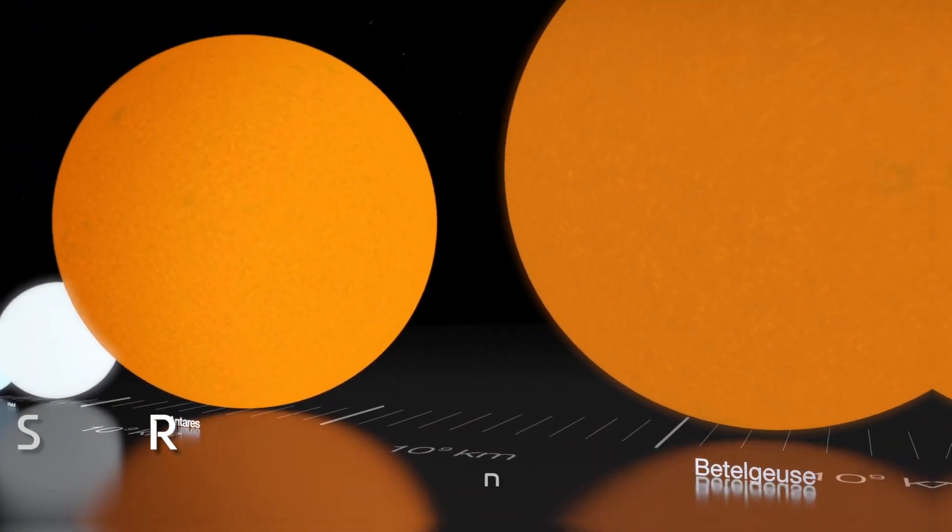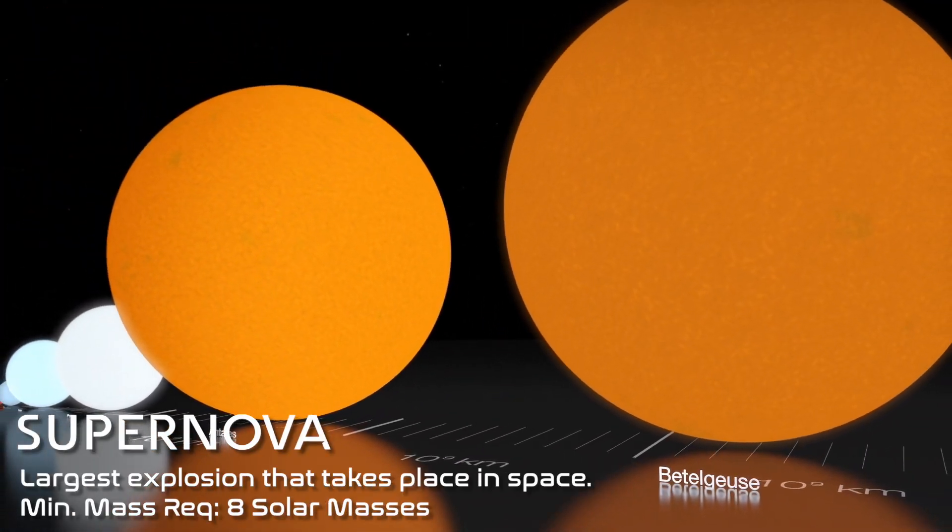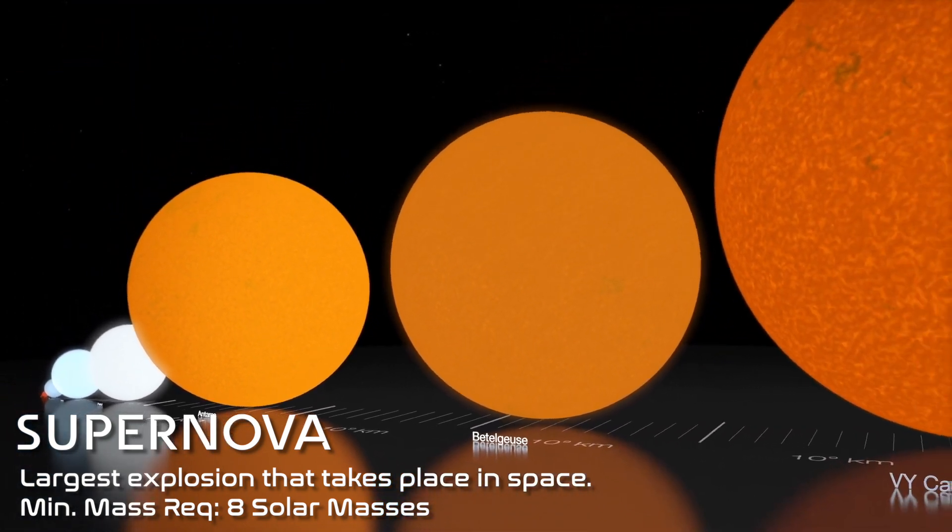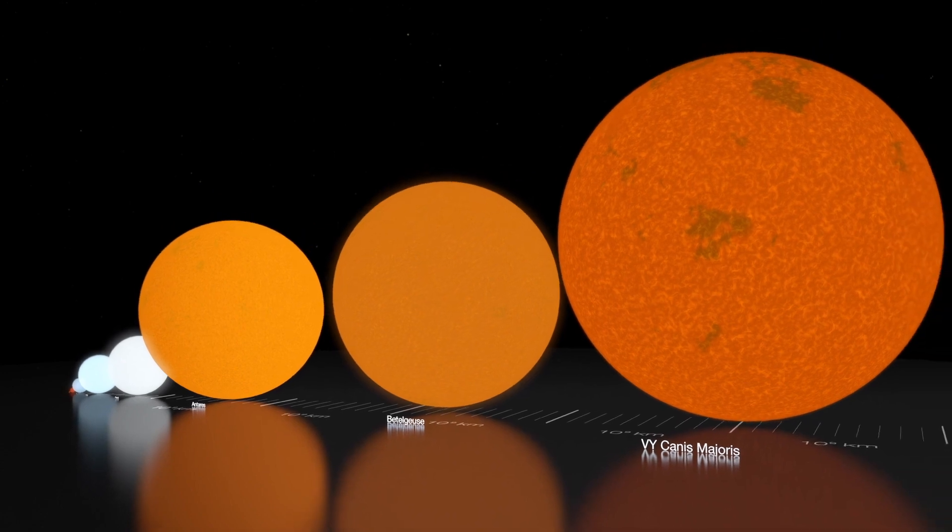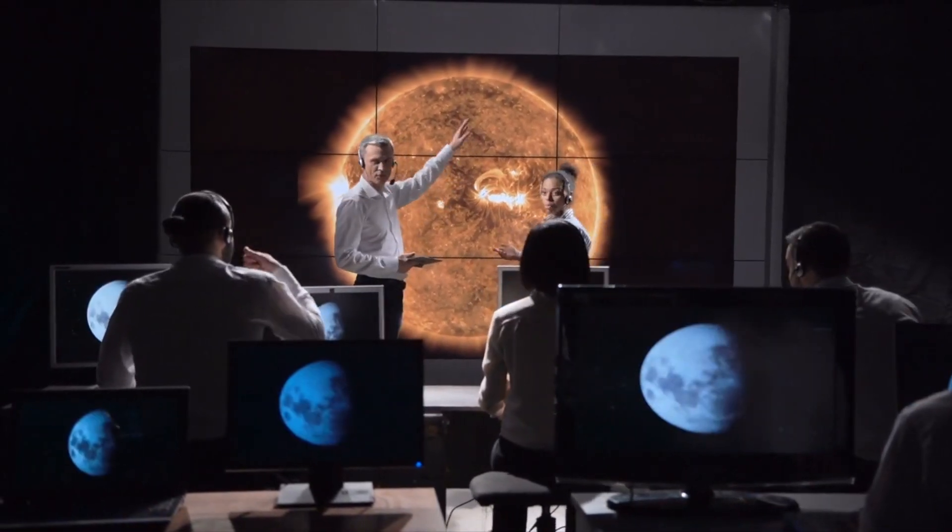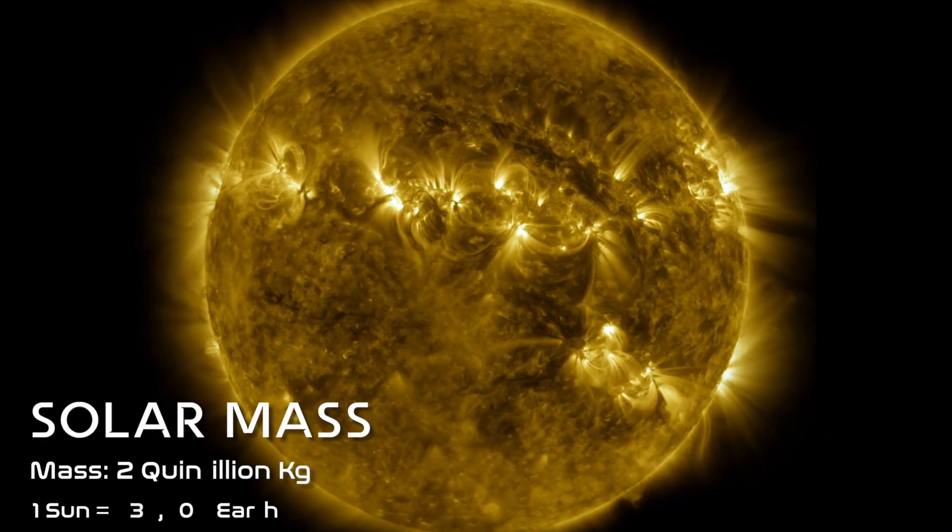If you watched our videos on supernova, you must already know that for a star to fully go supernova, it is required to have a mass of at least equal to eight solar masses, which is the undisputed threshold in the scientific community.